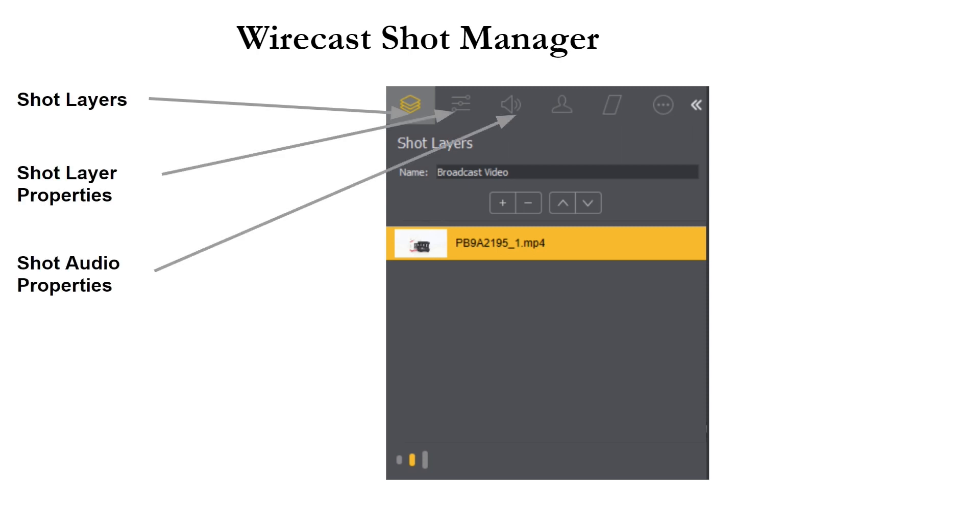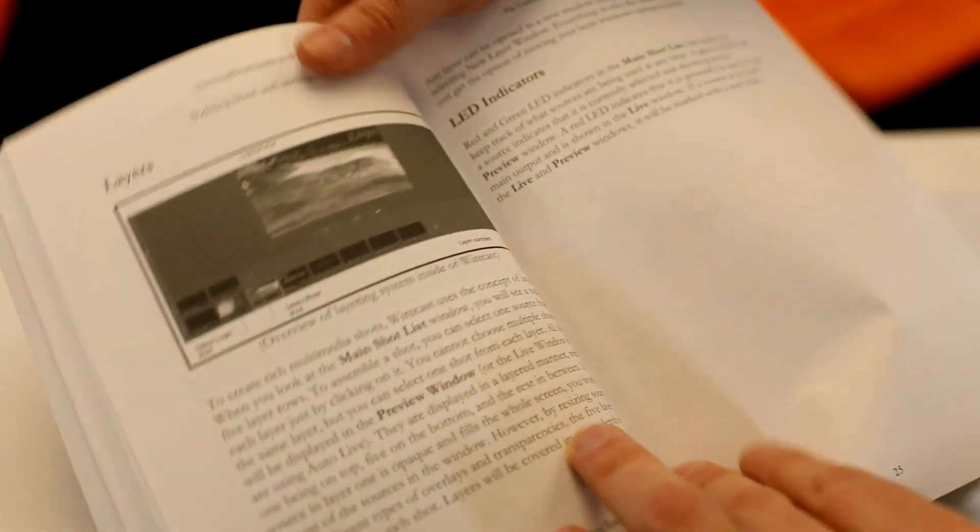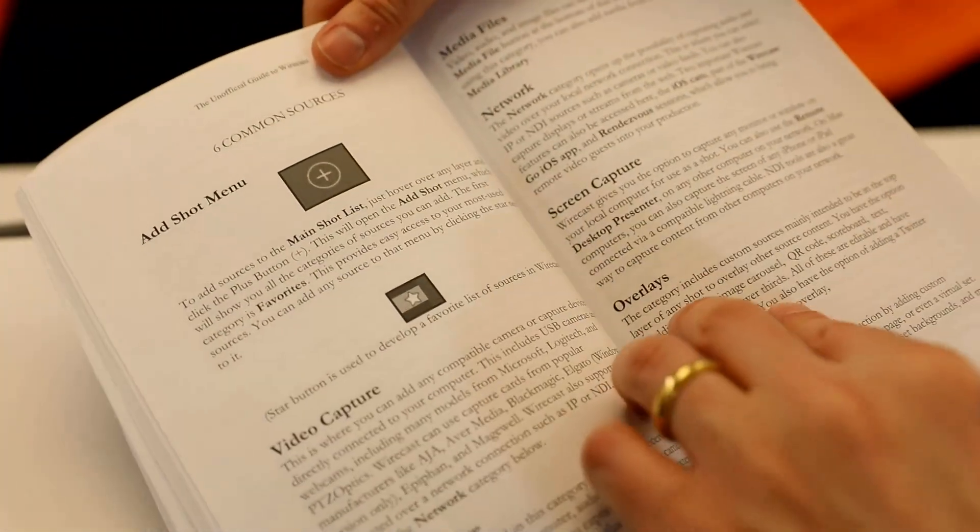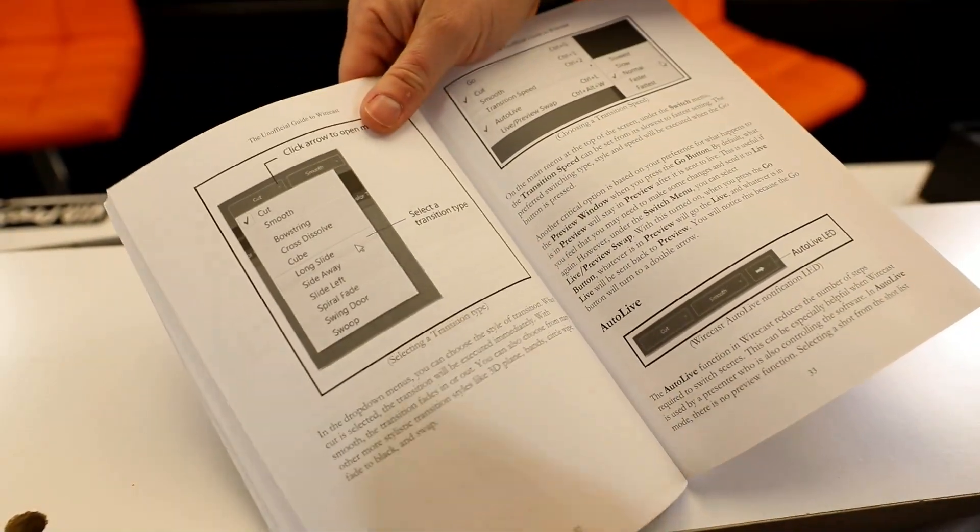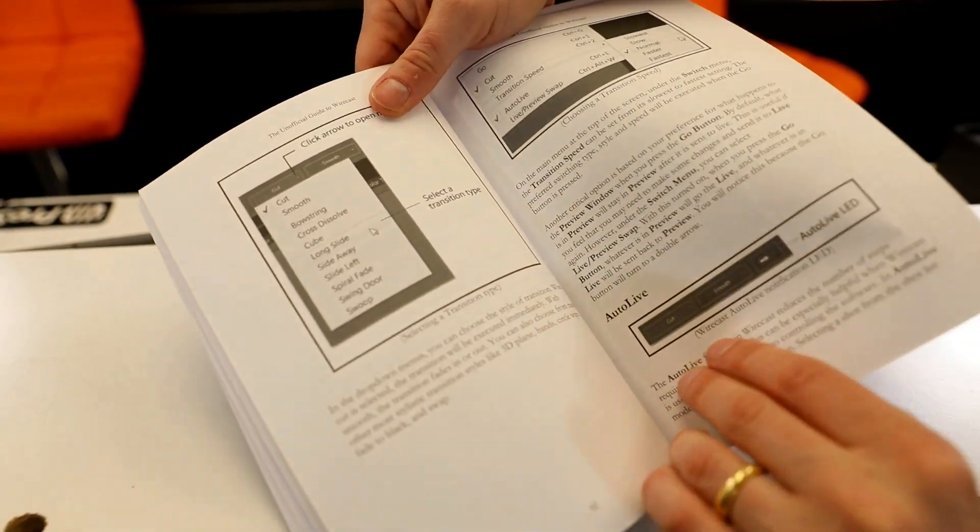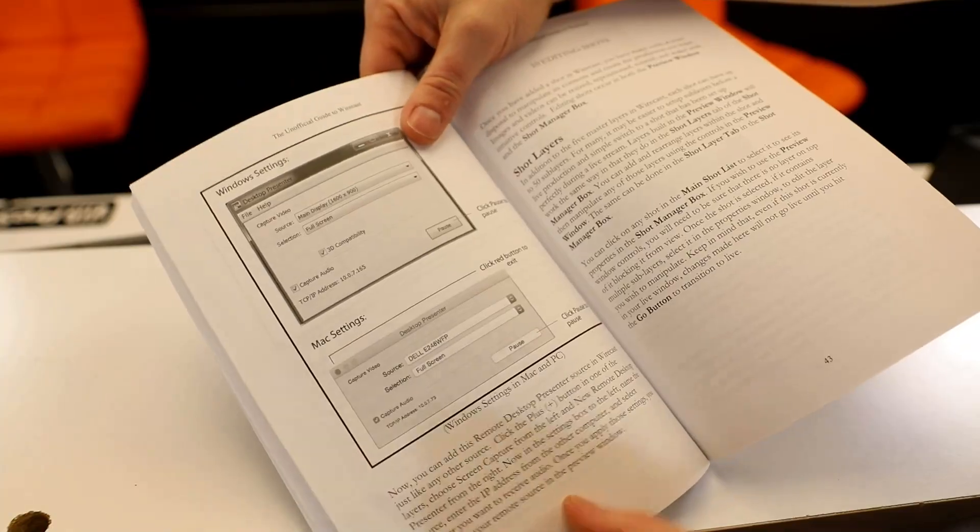This will eventually include more advanced features like options for chroma keys, luma, replay, ISO, hot keys, and social media integration tools. Get your next video production project started with Wirecast by reading this awesome guide.